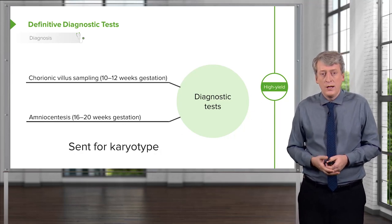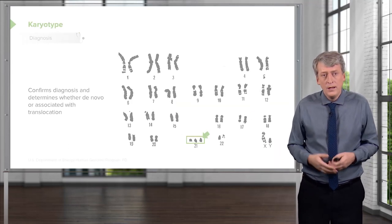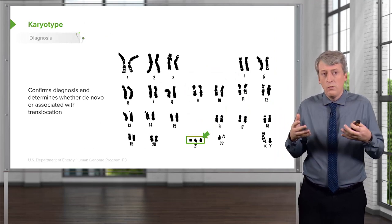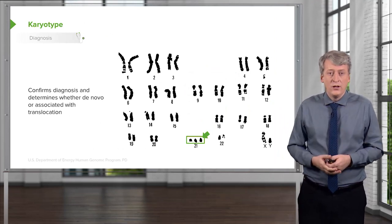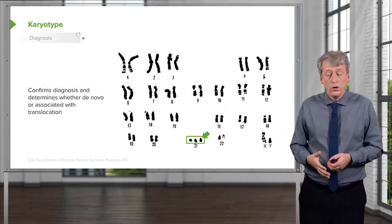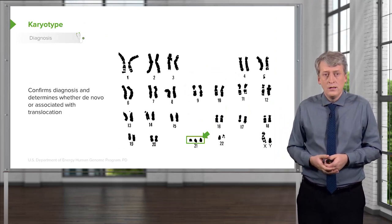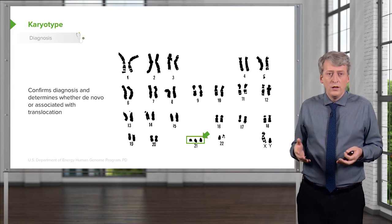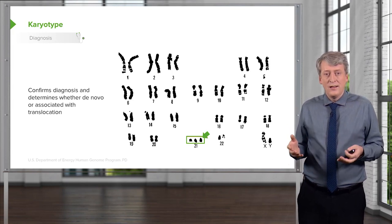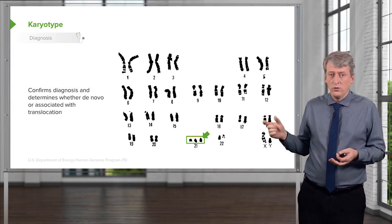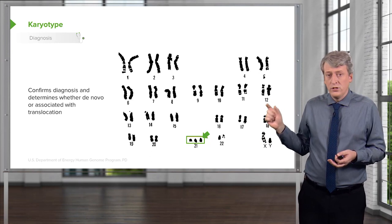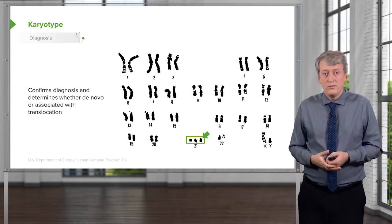Definitive in utero testing is done through chorionic villus sampling around 10 to 12 weeks of gestation, or amniocentesis around 16 to 20 weeks. We obtain actual cells from the baby and perform a karyotype to determine their genetic makeup. A karyotype confirms whether the patient has a translocation or de novo three copies of chromosome 21 in each cell.